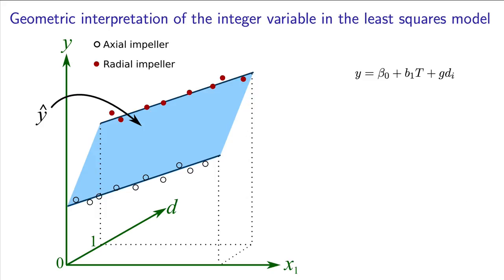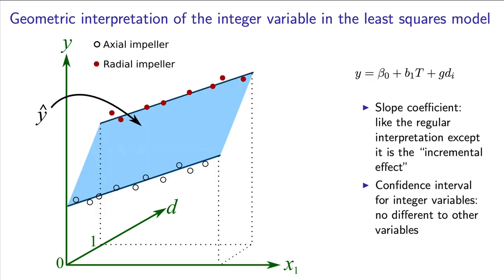To summarize so far, our interpretation of the slope coefficient when we deal with integer variables is no different to that from before. You just have to be aware of which value you set as 0 or 1 and interpret it as the incremental change when going from the 0 case to the 1 case. The interpretation of confidence intervals for integer variables is no different to that for continuous variables.